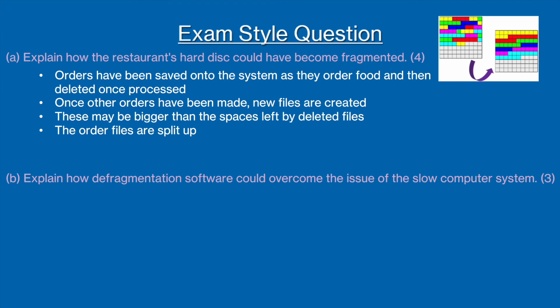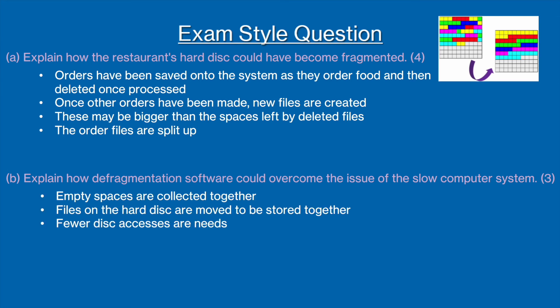For part B, we're talking about how defragmentation software works and how it stops the computer from being slow. We know that defragmentation software deals with spaces and files. To start off with, all the empty spaces on the hard disk are collected together. Then, all the files are collected together and moved to be stored together. This overcomes the problem of a slow computer, as fewer disk accesses are needed since all the files are stored together, rather than being spread around and requiring more accesses to different places. And there are our three points for our three marks.